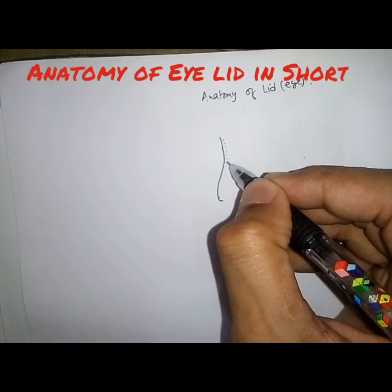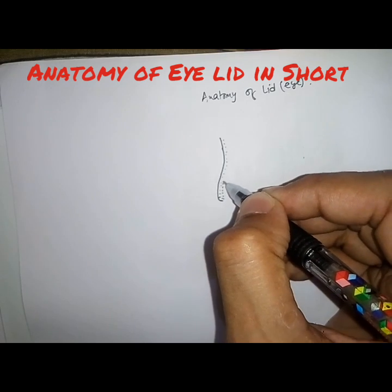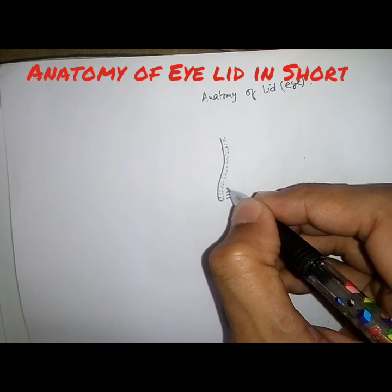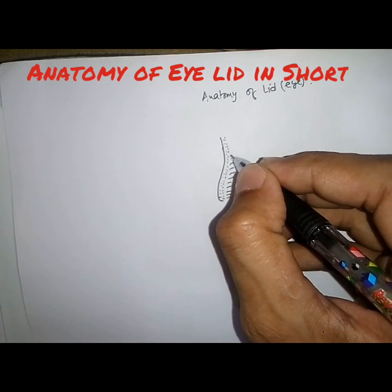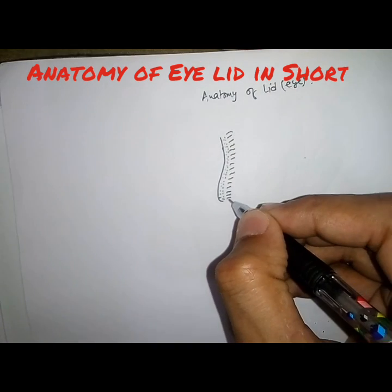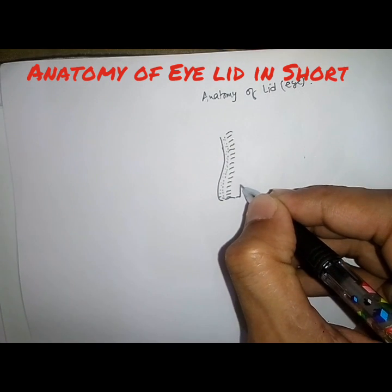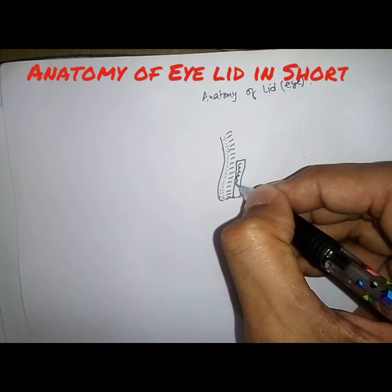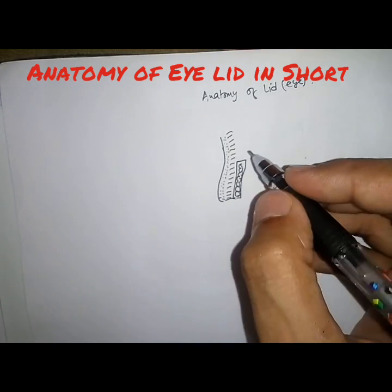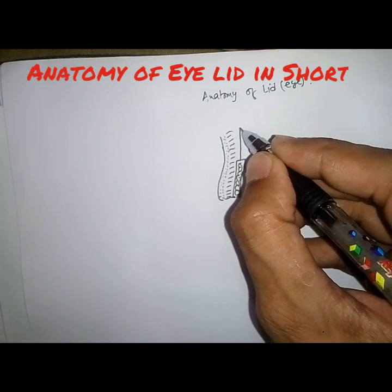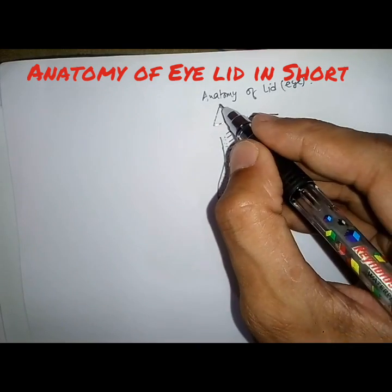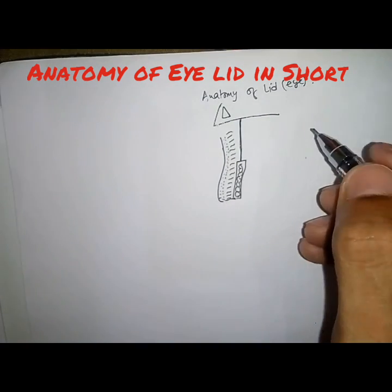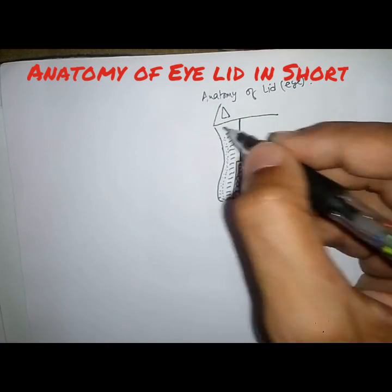After the skin there is a submucosal layer. Below the submucosal layer there is the orbicularis oculi muscle, then the fibrous tarsal plate. In the tarsal plate there is a gland known as the meibomian gland. The tarsal plate is attached to the inferior portion of the orbital septum.